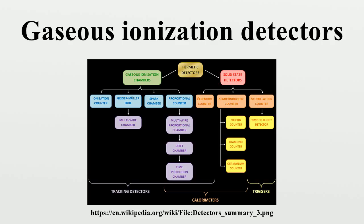Ionization chambers operate at a low electric field strength, selected such that no gas multiplication takes place. The ion current is generated by the creation of ion pairs, consisting of an ion and an electron. The ions drift to the cathode whilst electrons drift to the anode under the influence of the electric field. This current is independent of the applied voltage if the device is being operated in the ion chamber region.